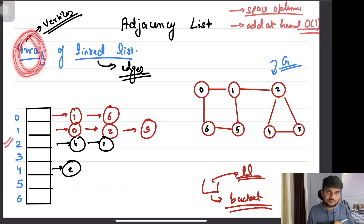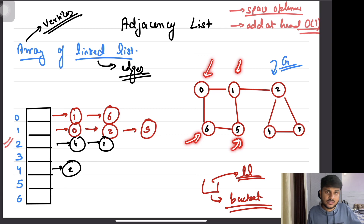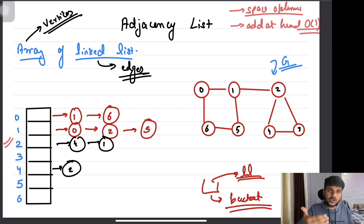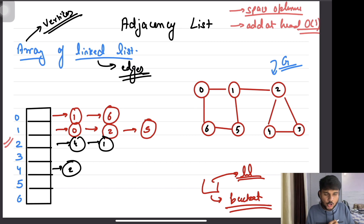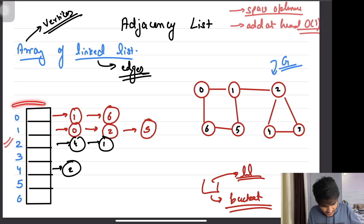You might ask why we are using an array at all. That's a good question — we use an array because we want to access vertices in a much faster way. If you used a linked list here also, you would need to iterate over it to reach any vertex, which we don't want. We want fast access to vertices so we can add edges and process them efficiently. That's why we keep an array.